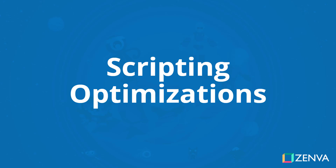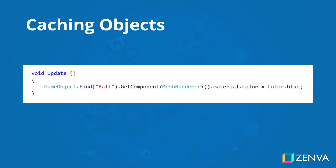Hey everyone, in this lesson we are going to go over a couple different scripting optimizations that you can implement in your projects in order to increase performance. With mobile games especially, performance is something you always need to keep in mind. The first thing we're going to look at is caching objects.